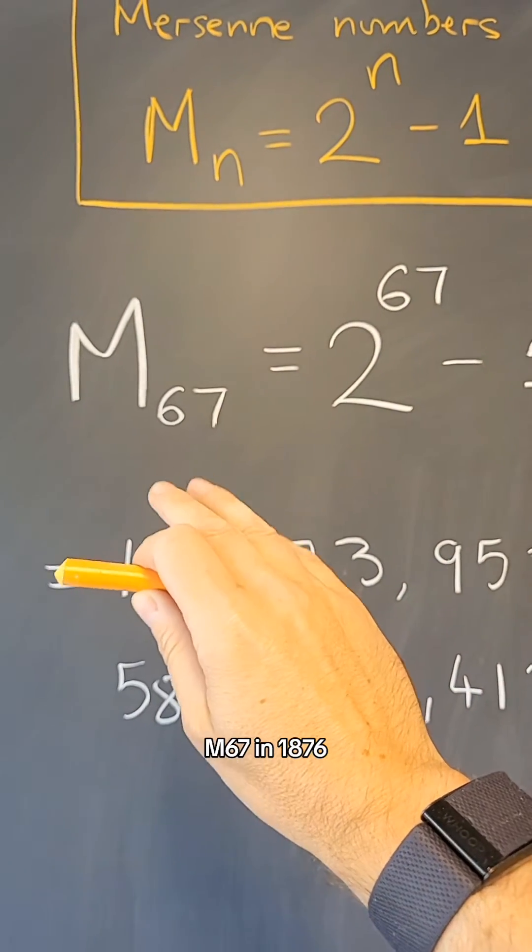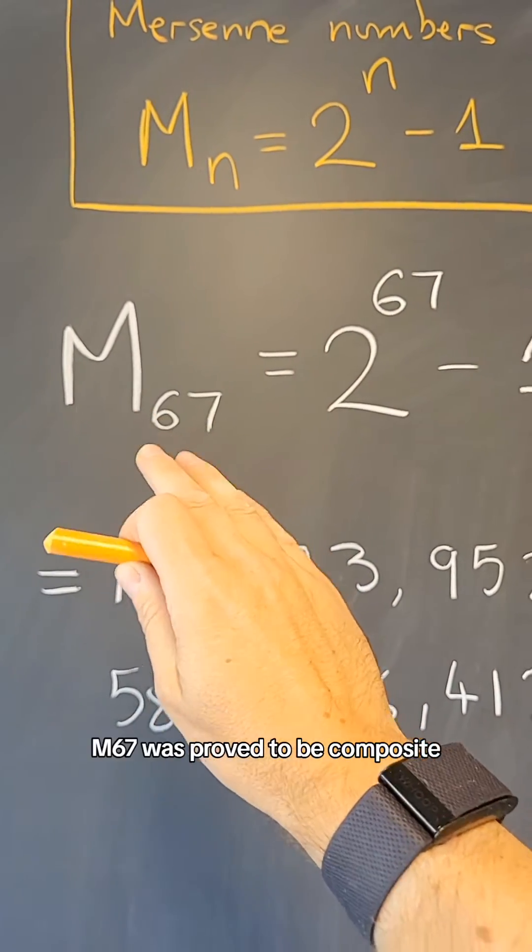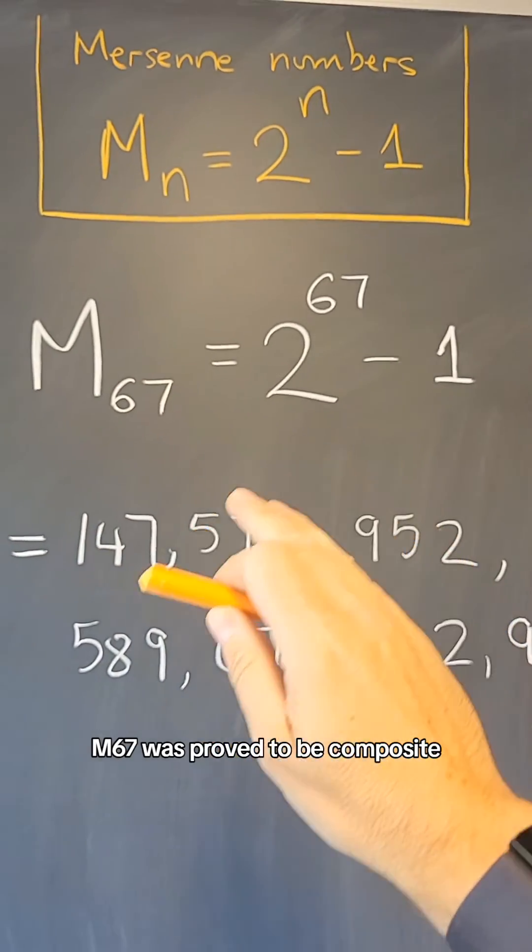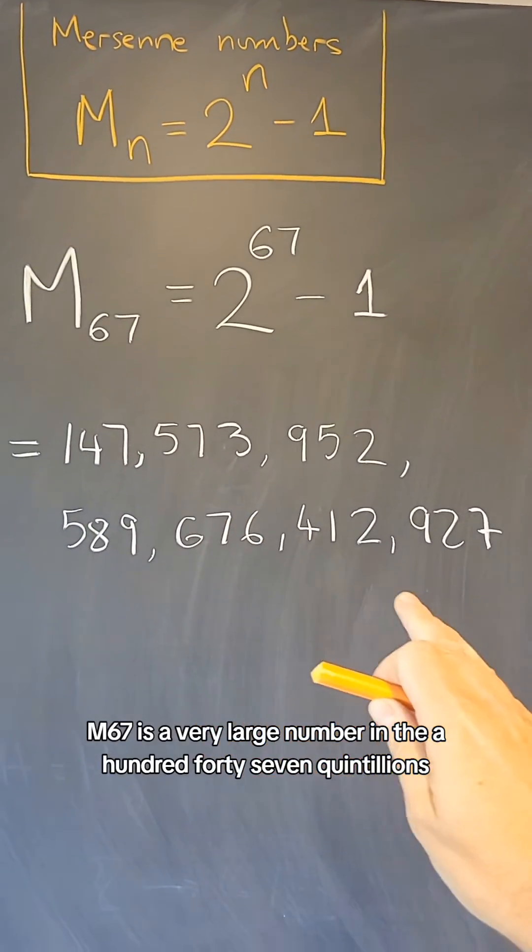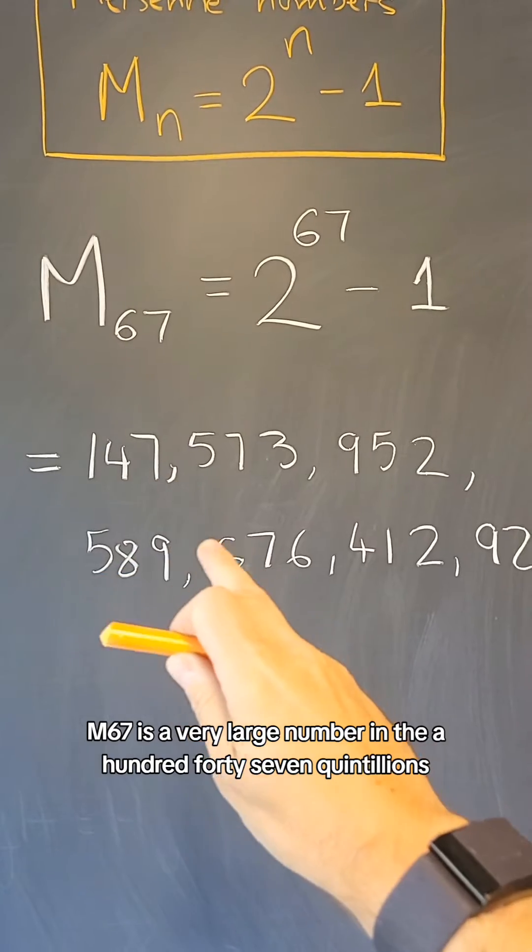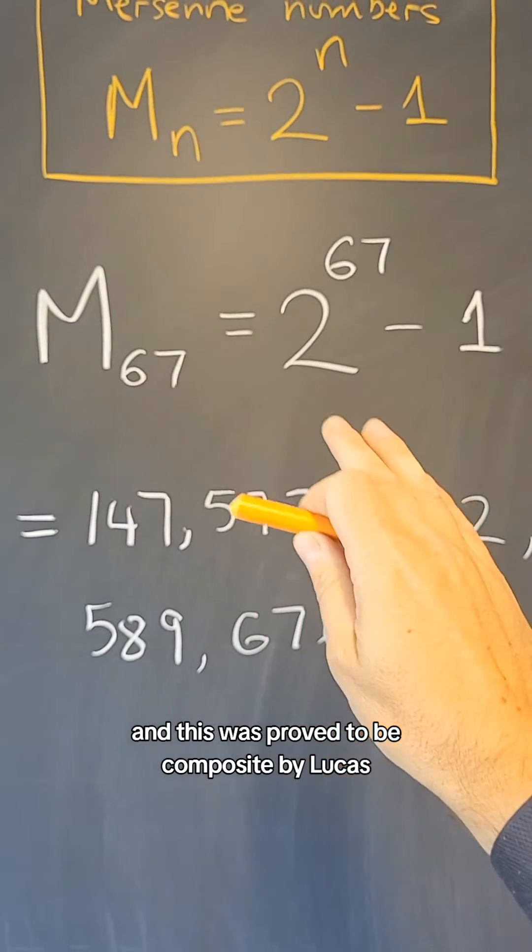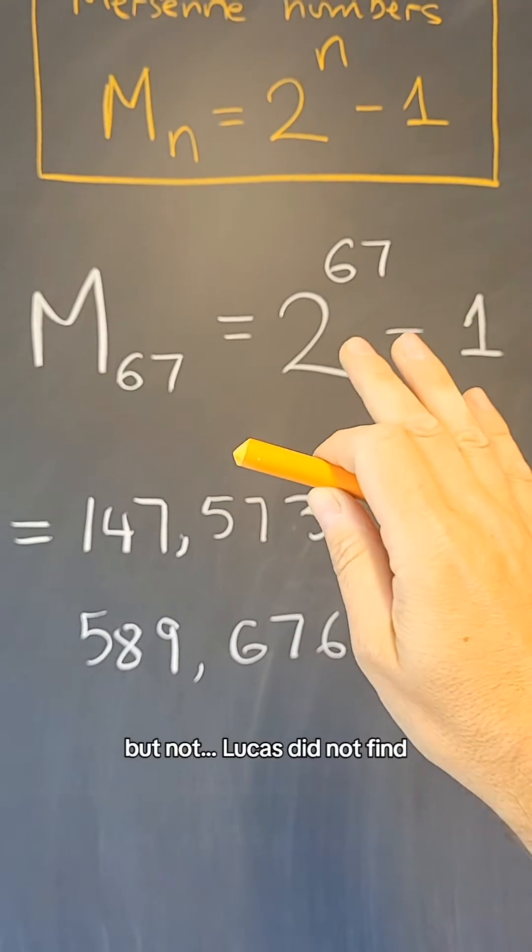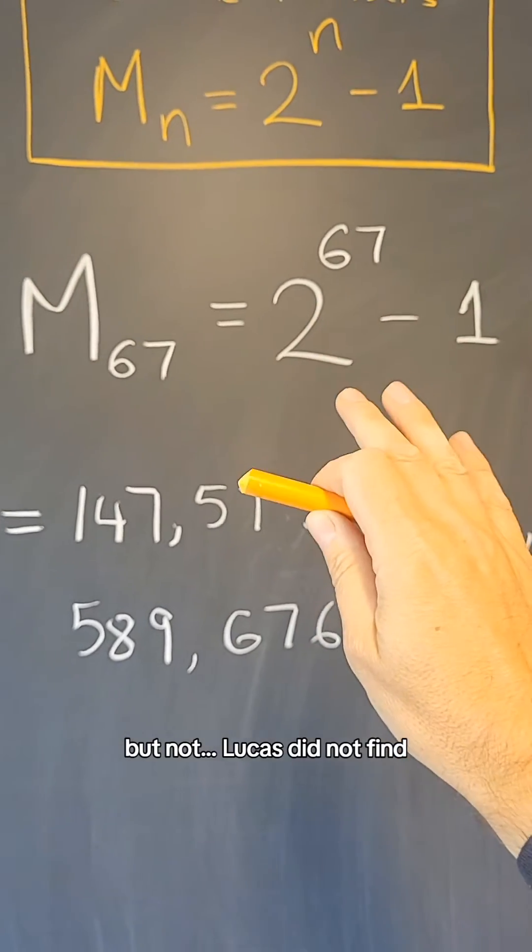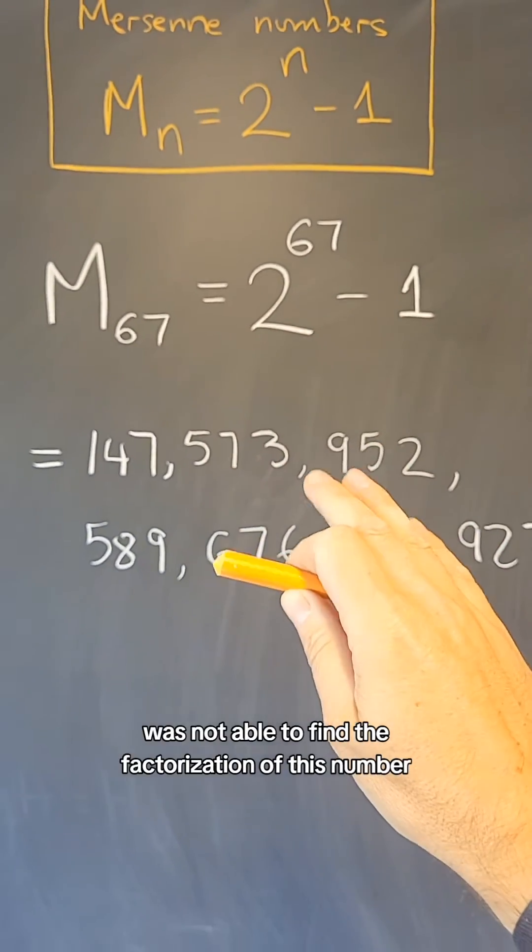M67 in 1876, M67 was proved to be composite. M67 is a very large number in the 147 quintillions. And this was proved to be composite by Lucas, but Lucas did not find, was not able to find the factorization of this number.